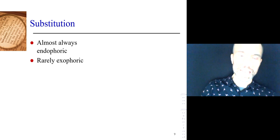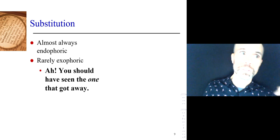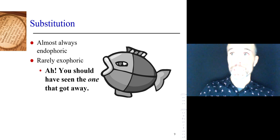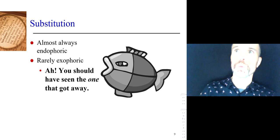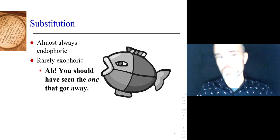For example, if someone's holding a big fish and you look, and they say, 'you should have seen the one that got away' — you'd be able to figure it out from the context. Exophoric means looking at the context: you see a big fish, and 'the one' means the fish. So substitutes share many of those same properties as references. Types of substitution — nominal substitution, verbal substitution, and clausal substitution.